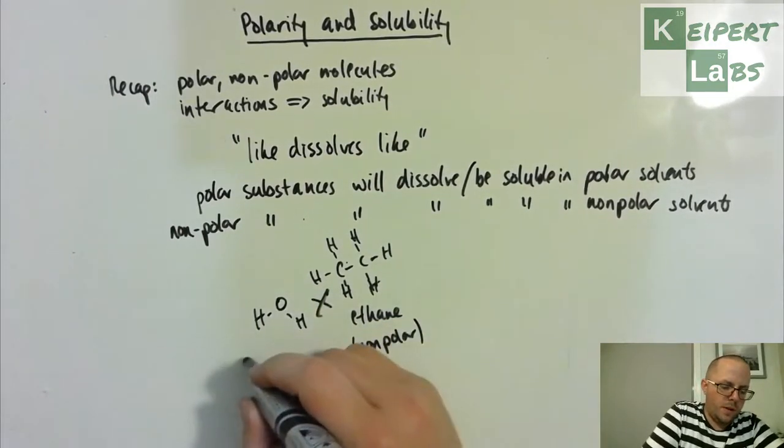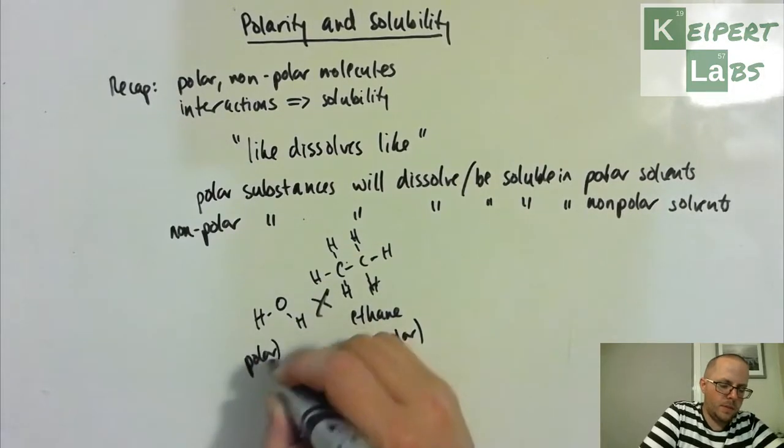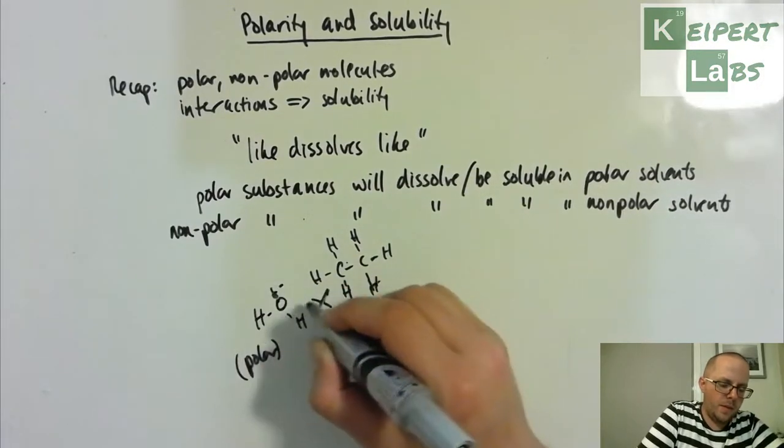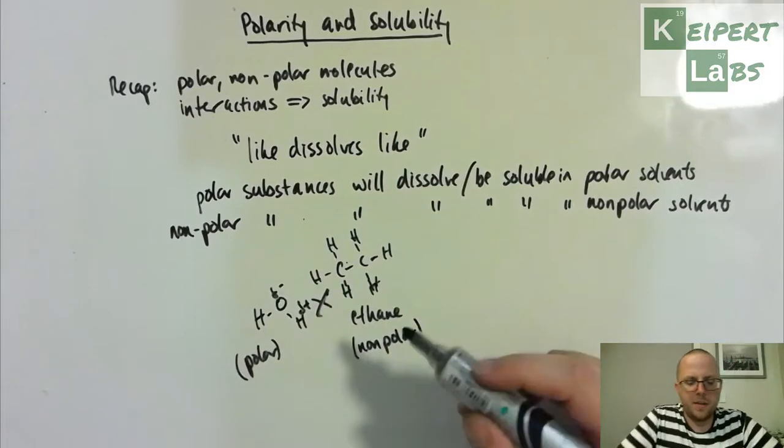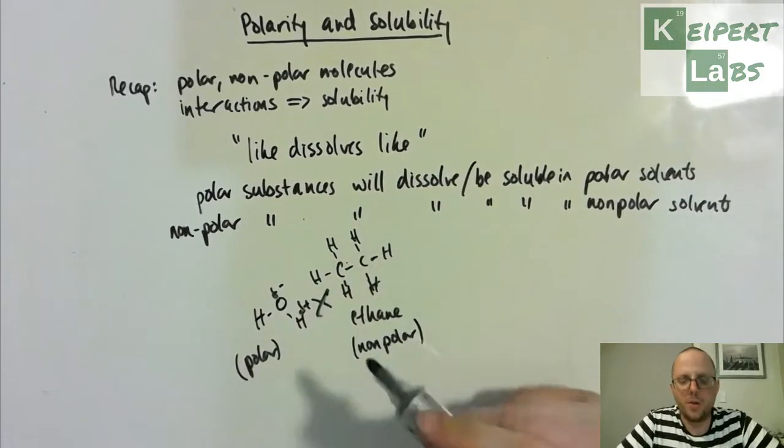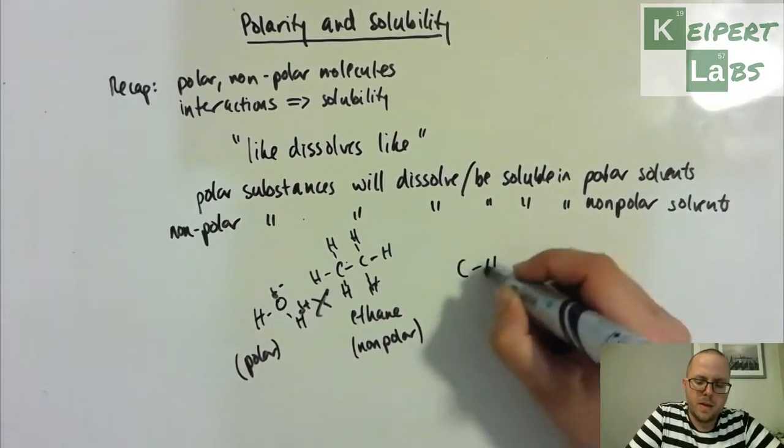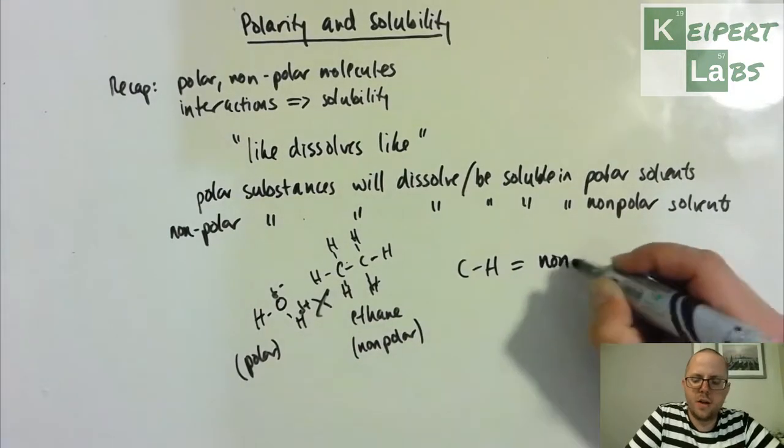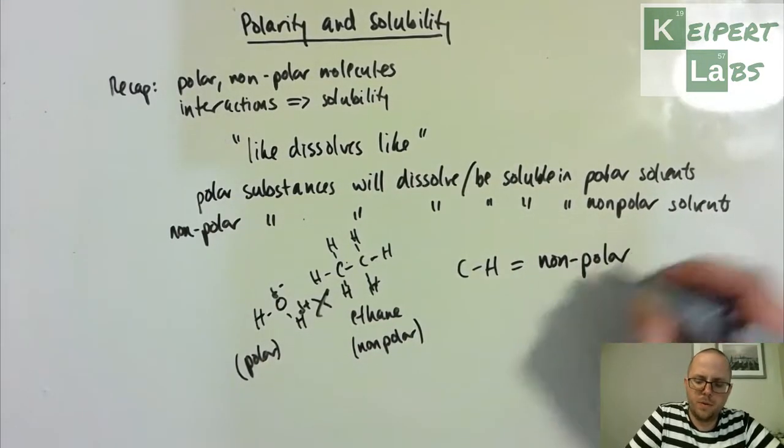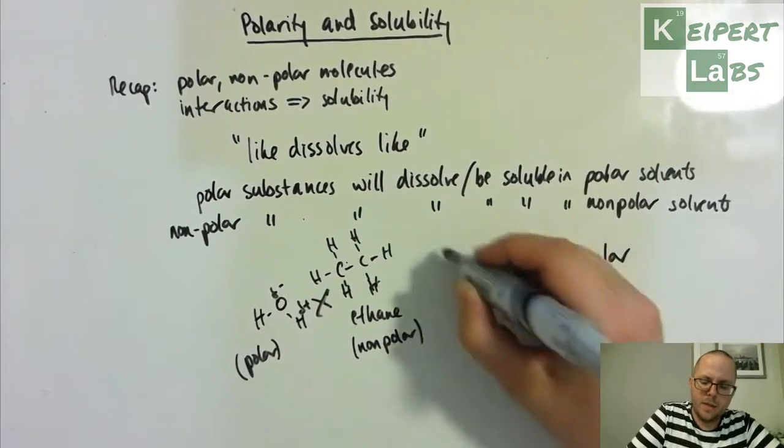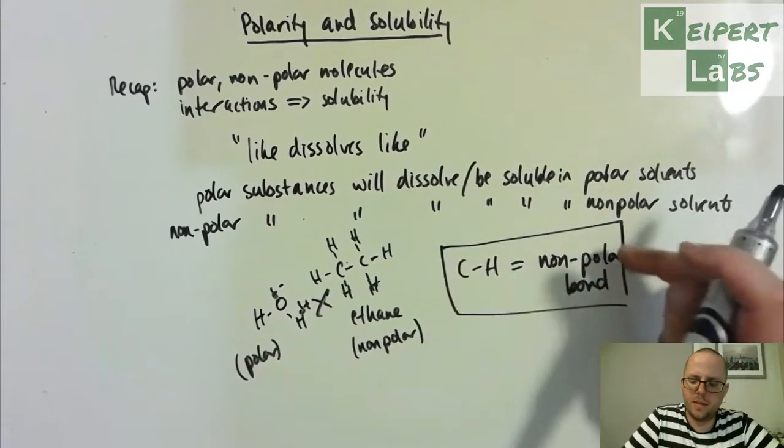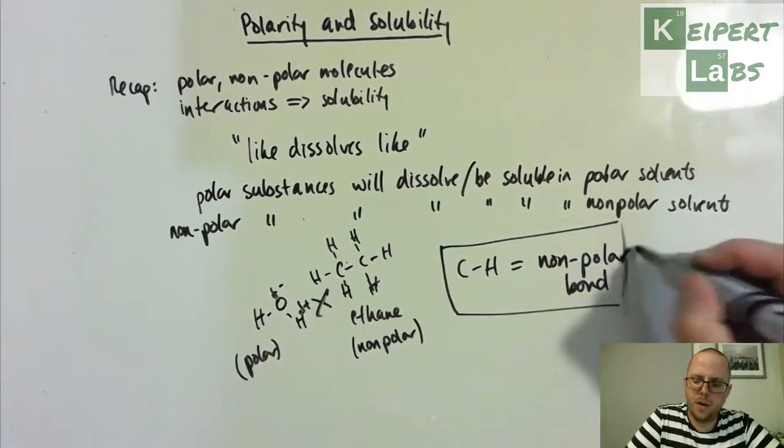We have a negative end and a positive end, but we've talked about this idea in the past that carbon-hydrogen bonds, C-H, is essentially a non-polar bond. That's really important to remember because that has a lot to do with the behaviour of hydrocarbons.